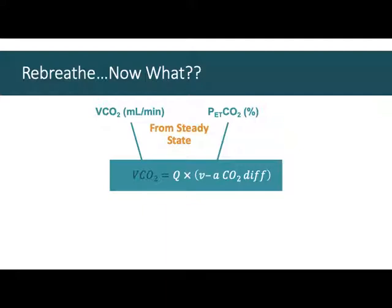When you get to lab, you'll do this at rest and at a couple of exercise intensities. During the steady state portion — while the person is exercising and breathing normally — you get VCO2 and end-tidal CO2. These first two measurements come from the steady state portion, before you do the rebreathe procedure.